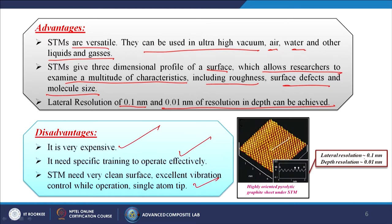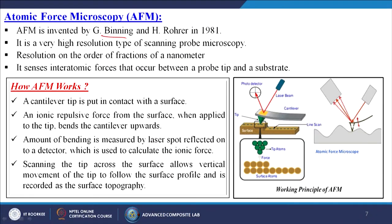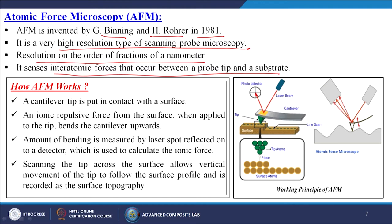Next is atomic force microscopy, or AFM. AFM was invented by G. Binning and H. Rohrer in 1981. It is a very high resolution type of scanning probe microscopy, with resolution on the order of fractions of a nanometer. It senses interatomic forces that occur between a probe tip and a substrate.